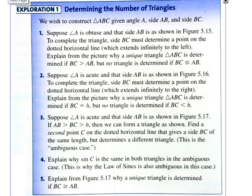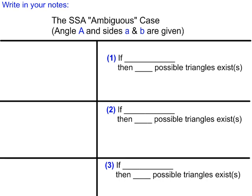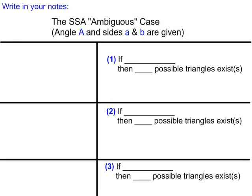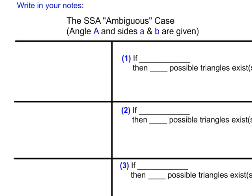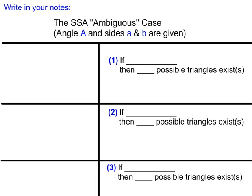Here's what I suggest you put in your notes — leave about half a page. Make a table with four cases, titled something like 'The SSA Ambiguous Case.' We'll be looking at angle A, side a, and side b as the given values. Keep in mind there may be other variable combinations, so don't get too tied to just A, a, and b.